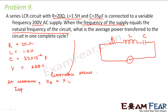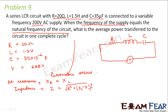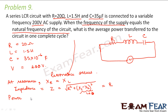So what would be the impedance of this circuit? Impedance Z is equal to root over R squared plus (XC minus XL) whole squared. Now in this case XC and XL are equal, so this term equals zero. Therefore the net impedance of the circuit is equal to the resistance of the circuit.